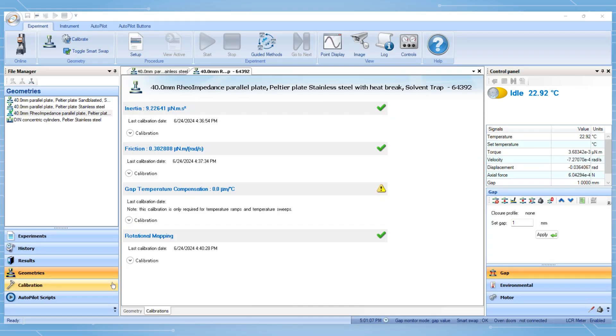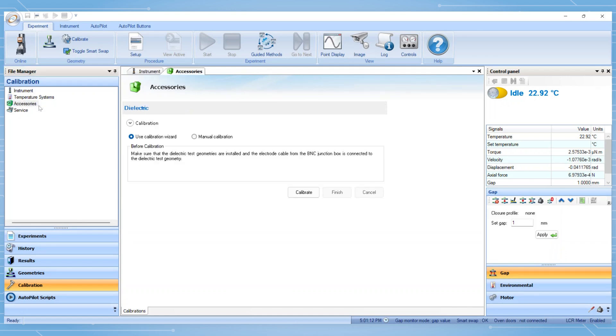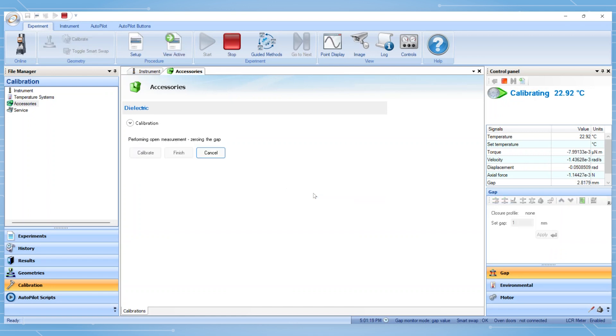To perform the open and short calibrations, navigate to the Calibration tab, select Accessories, then choose Use Calibration Wizard, and select Calibrate. Follow the wizard prompts.